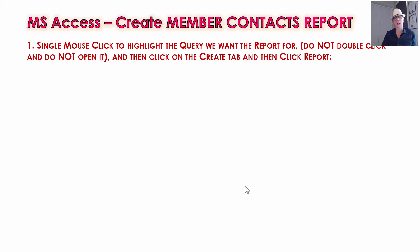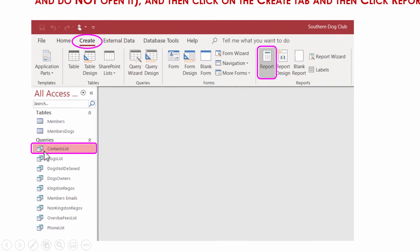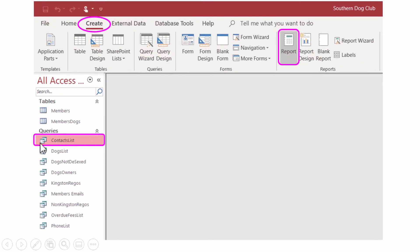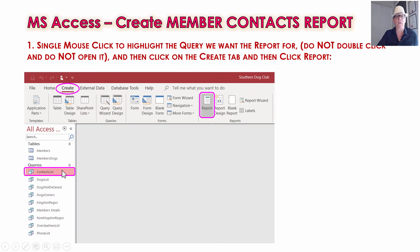Let's start off and create that member contacts report. You have to single-mouse highlight the query — don't double-click or open it — and then click on your Create tab. This time we're not creating a table or a query, we're creating a report. Make sure you're on All Access Objects, single-click on Contact List so it's highlighted, and then click Create Report. Access will know you're trying to make a report for the contact list.